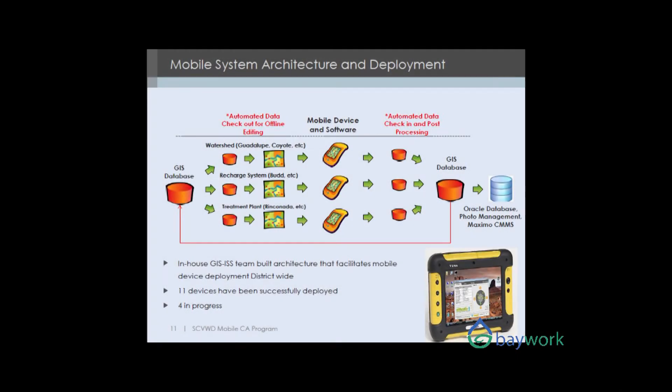When you take the device, you can check out packets of data. The reason we have packets of data is the treatment plant inspection group may not want to see the recharge system or the watershed system and vice versa. You can decide what you want to check out, or IT can set it up based on your login. You get into the mobile device, do your inspections, come back in and check that data in.